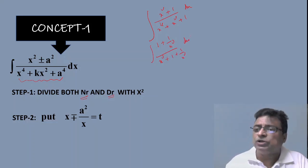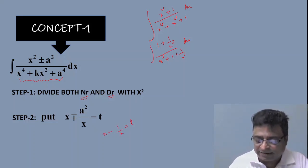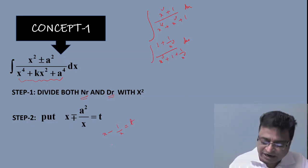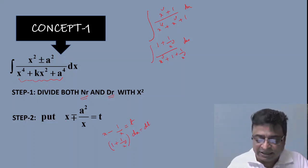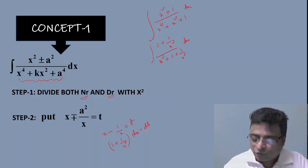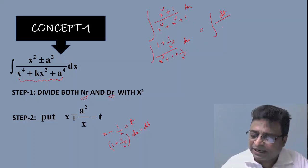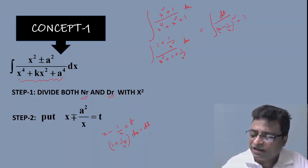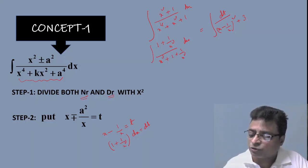Since the numerator contains a plus sign, I take x − 1/x = t. After differentiation, (1 + 1/x²) dx = dt. The denominator can be written as (x − 1/x)² + 3, because expanding gives x² − 2 + 1/x², and −2 + 3 = 1, so the denominator becomes t² + 3. The integral becomes ∫ dt / (t² + 3).